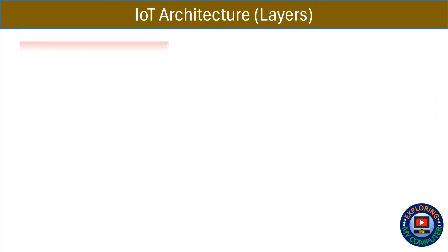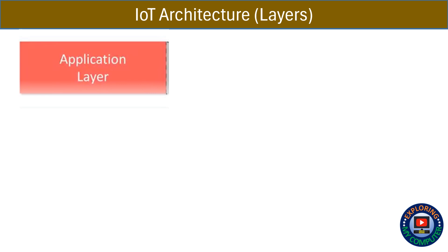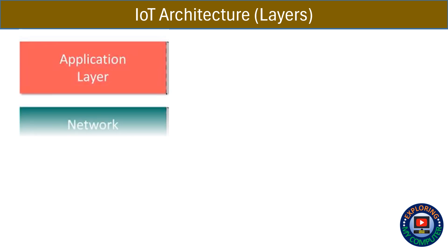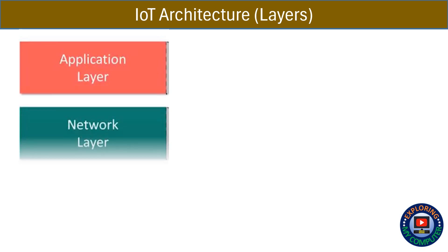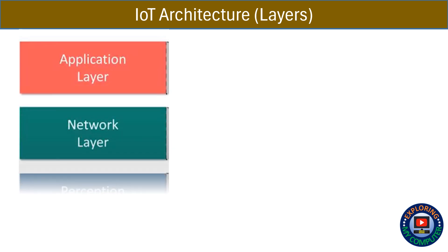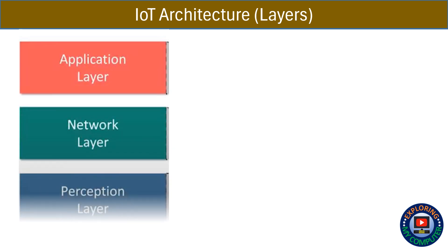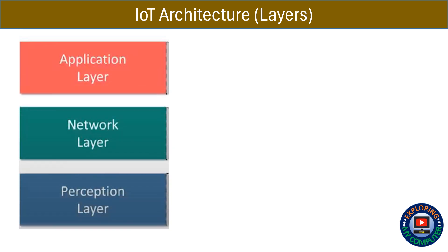Basic IoT architecture or layers are shown below: 1. Application layer, 2. Network layer, 3. Perception layer.